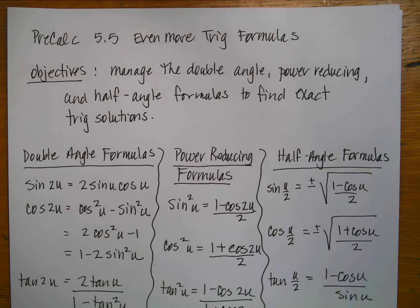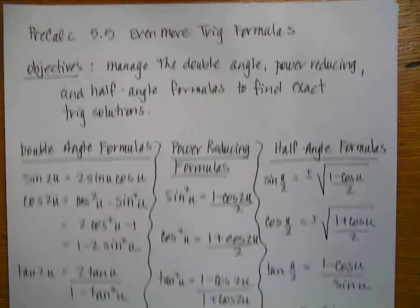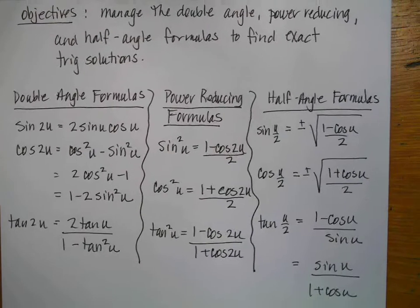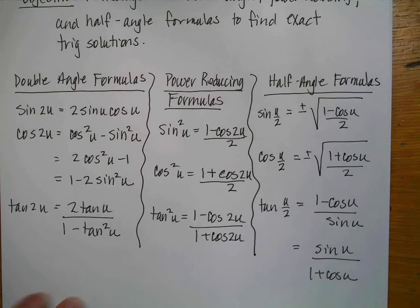Hello, math humans. We're going to do our last section of trig in this particular chapter — we're going to do even more trig formulas. Our objectives are that we're going to manage the double angle, the power reducing, and the half angle formulas with the purpose of finding exact trig solutions. I've written all of them out, and I would recommend highly that you copy them all down. Remember that they are in the front of your textbook, so it is nice to have a complete and concise location for all of the identities and formulas we have learned in this chapter.